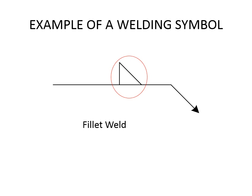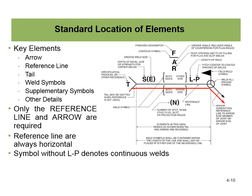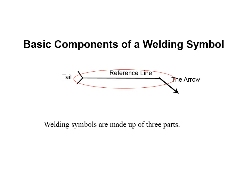Here you can see an example of a welding symbol — this one has a fillet weld symbol on the reference line. The three basic components of a welding symbol are the tail, the reference line, and the arrow. These are the three biggies. You don't necessarily need the tail — it can be omitted if there's no extra information — but every welding symbol needs a reference line and an arrow. These are mandatory.